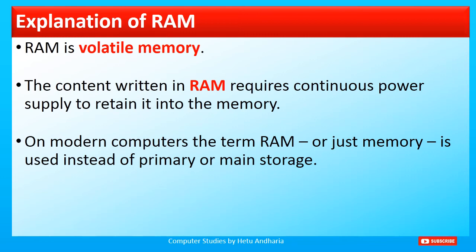The content written in RAM requires continuous power supply to retain it in memory. For example, if you are preparing a drawing using Paint program and have not yet saved the file, you are still able to draw. Temporarily it is stored somewhere — in RAM. If the power supply goes off, the picture you had prepared will be lost. So temporarily it is stored in the RAM. On modern computers, the term RAM is also called just 'memory' and is used as a synonym for primary storage device or main storage device.